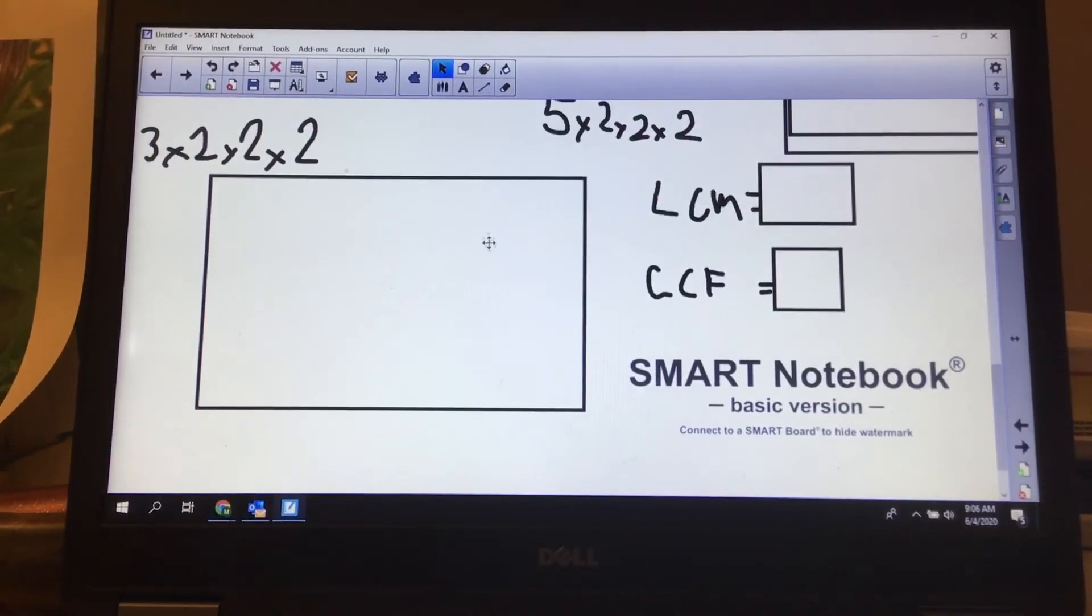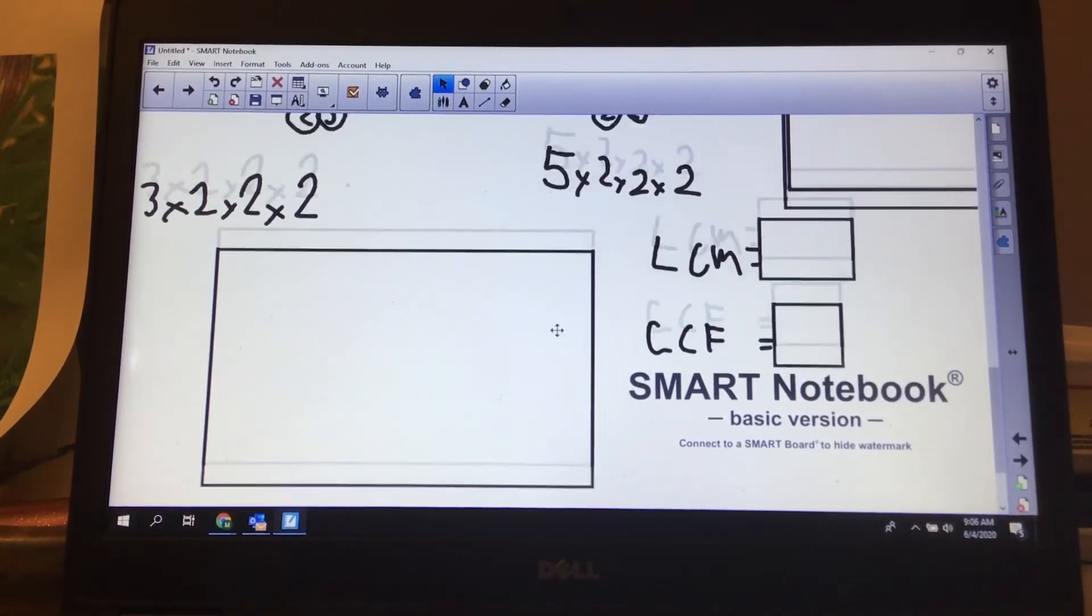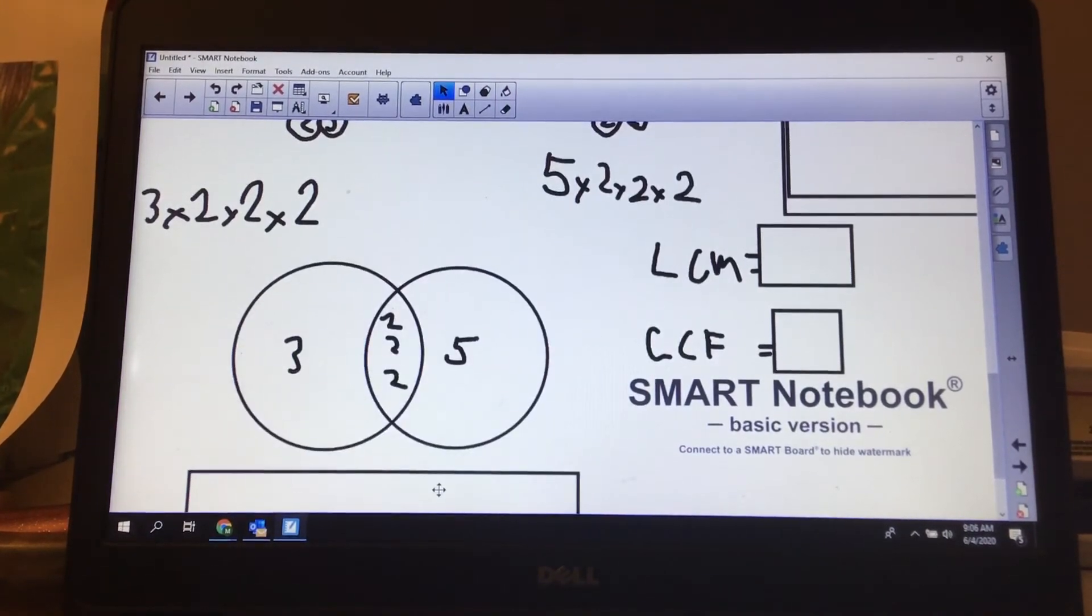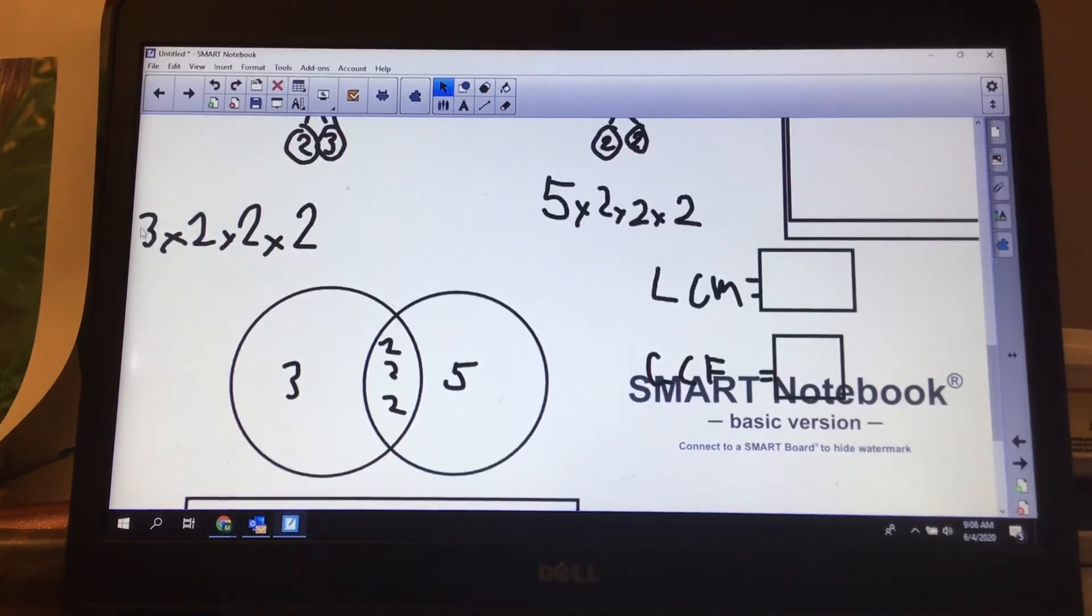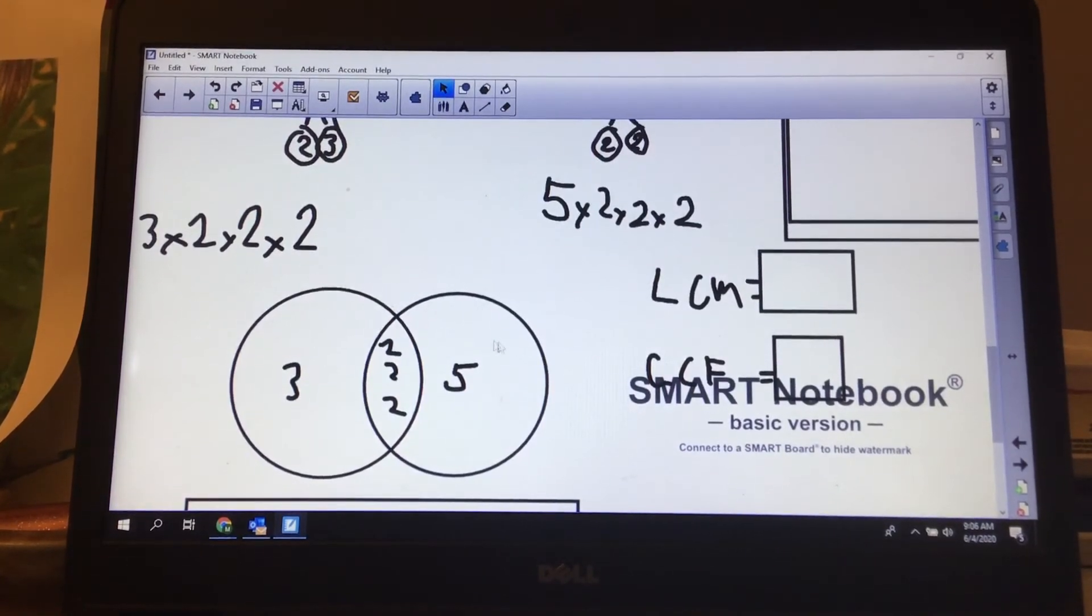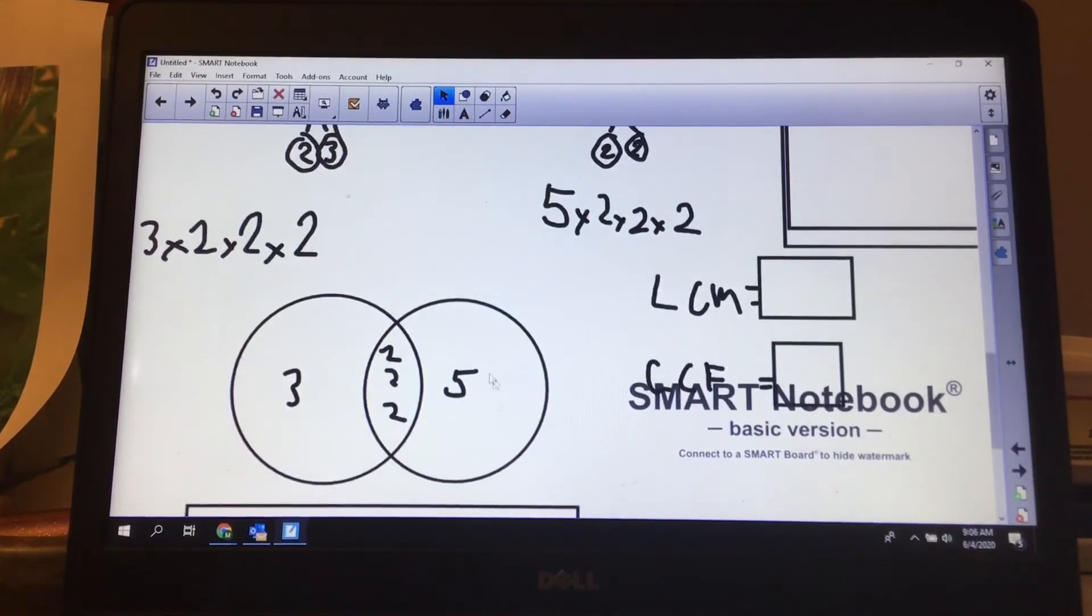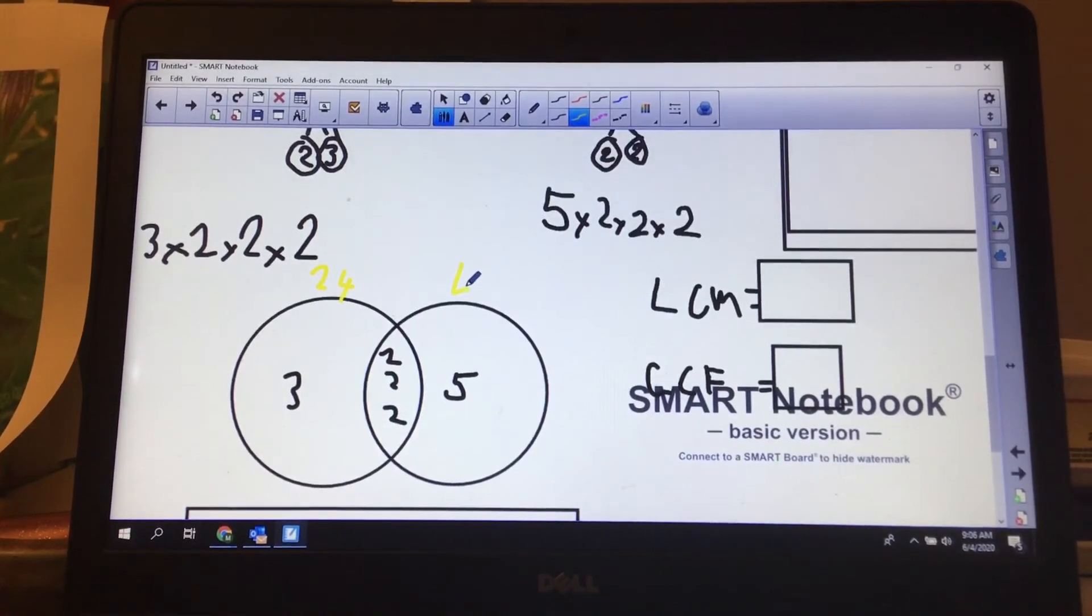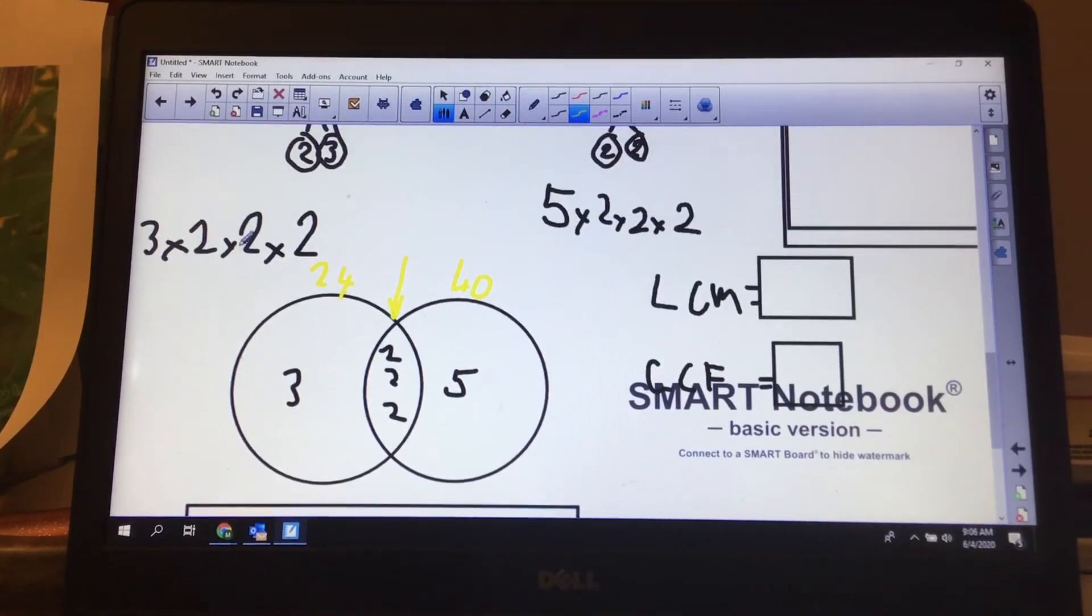So the next stage, we pop this into our Venn diagram. So you should have realized I have 3 twos in both lists. So in the middle would be my 3 twos. What's left over, I've got a 3 on this side and a 5 on that side. So on the 24 side, this is 24, this is 40, and the thing in the middle is what they share. They share the 3 twos.